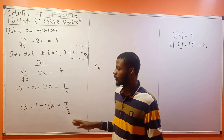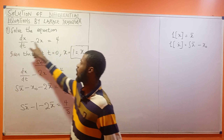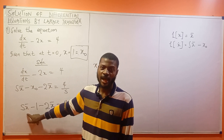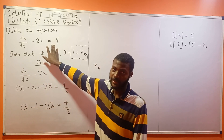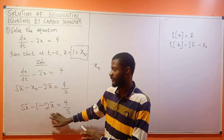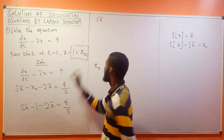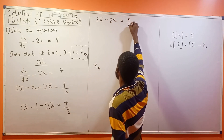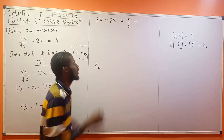Now let us proceed. In this question, we are concerned with finding S bar. Remember, the solution is obtained by taking the inverse Laplace of S bar. So we're going to isolate S bar. This minus 1 can come over to the other side, so it becomes plus 1. So we have: S times S bar minus 2 S bar equal to 4 over S plus 1.